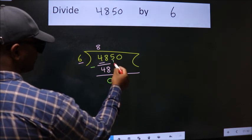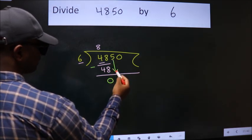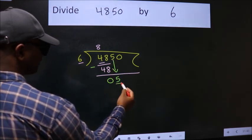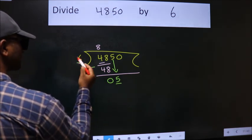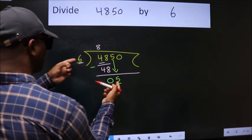After this, bring down the beside number. So, 5 down. Here we have 5, here 6. 5 is smaller than 6.